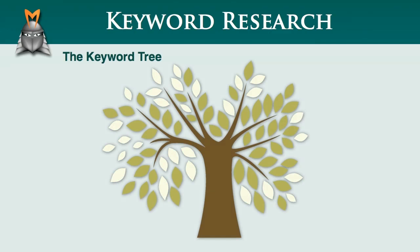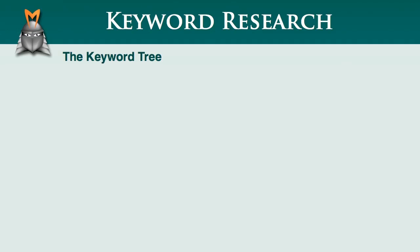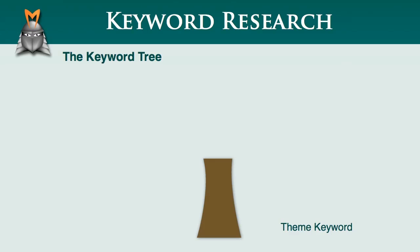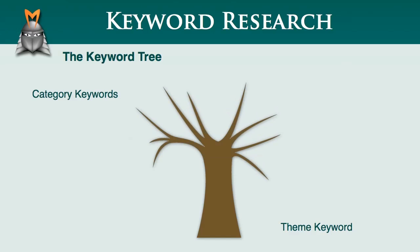To begin with, I'd like to introduce you to a concept we call the Keyword Tree, which is a good way to visualize the framework necessary for building a keyword-optimized website that attracts organic traffic. Previously, we discussed the process of identifying a theme keyword which becomes the main focus of your website. This theme keyword is equivalent to the trunk of your keyword tree. We also discussed how to identify several category keywords which were related to your theme keyword and also had a reasonable amount of traffic and an acceptable level of competition. These category keywords make up the branches of your keyword tree.